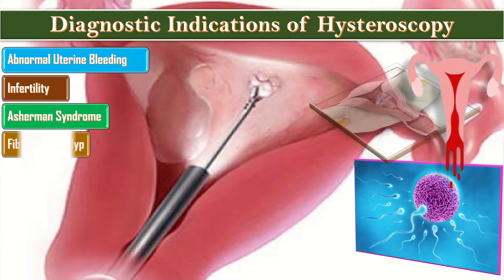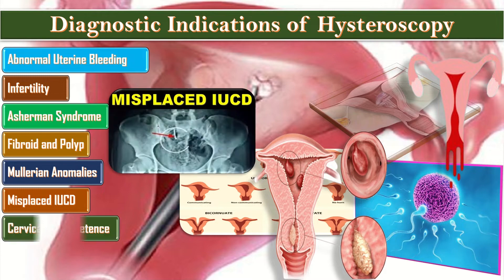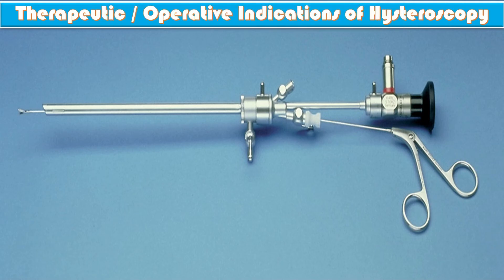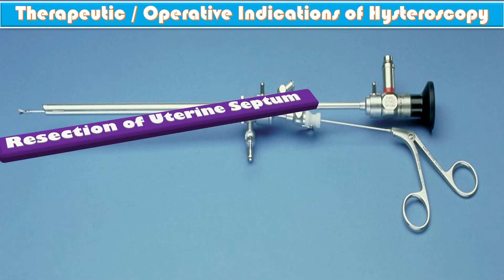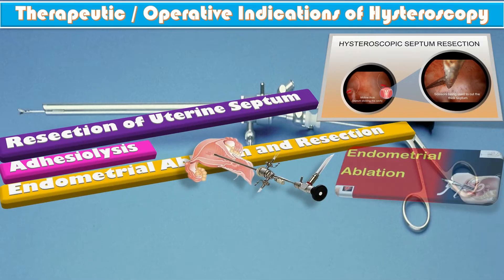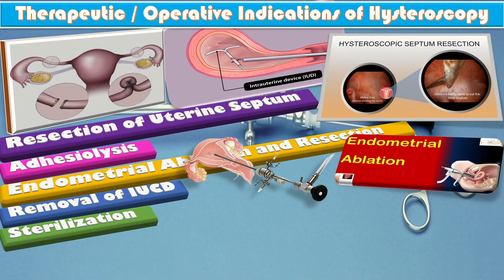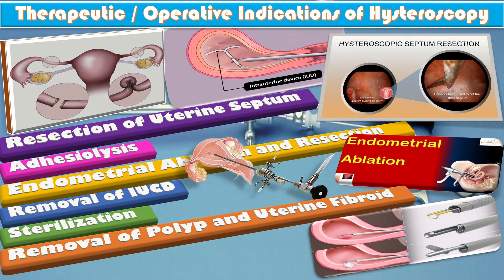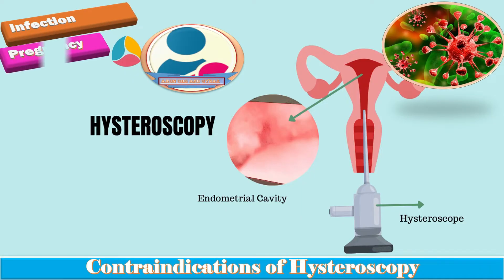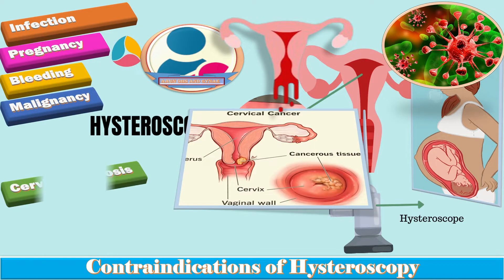The diagnostic indications of hysteroscopy include abnormal uterine bleeding, infertility, Asherman's syndrome, fibroid and polyp, mullerian anomalies, misplaced IUCD, cervical incompetence, and chronic pelvic pain. The operative indications include resection of uterine septum, adhesiolysis, endometrial ablation and resection, removal of IUCD, sterilization, and removal of polyp and pedunculated fibroid.